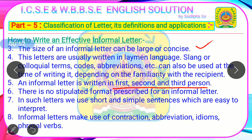All types of persons can be used in informal letters — first person like I, we; second person like you; third person like he, she, it, they, or any name such as Rahim, Karim, Madhu, Jadu and so on. Number 6: There is no stipulated format prescribed for an informal letter, though the state boards and ICSC and CBSE boards have prescribed an important format which we must follow. Number 7: In such letters, we use short and simple sentences which are easy to interpret and convey our message clearly.